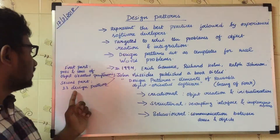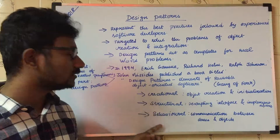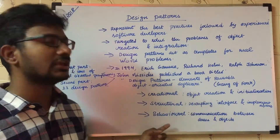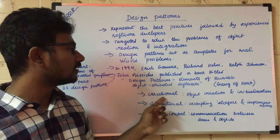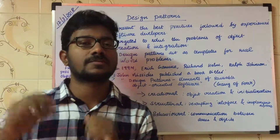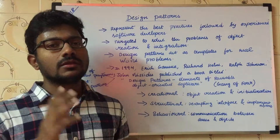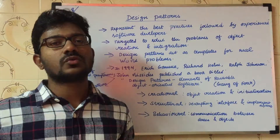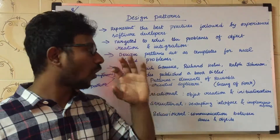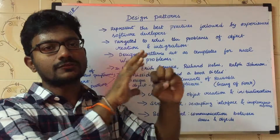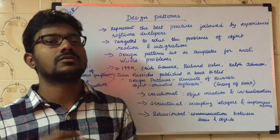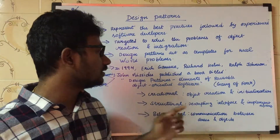These 23 design patterns fall under three categories: creational design patterns, structural design patterns, and behavioral design patterns. Under creational design patterns, it covers object creation and initialization. In object-oriented programming, we need to create objects for our real-world use cases, and the communication between objects is handled using creational design patterns.